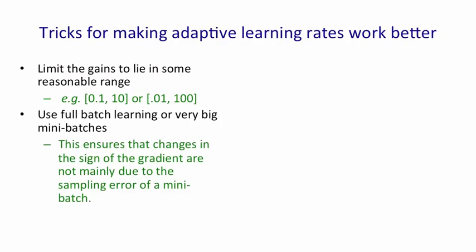The adaptive learning rates was designed for full-batch learning. You can also apply it with mini-batches, but they better be pretty big mini-batches. That'll ensure that the change in signs of gradients aren't due to the sampling error of mini-batches. They really are due to going to the other side of a ravine.